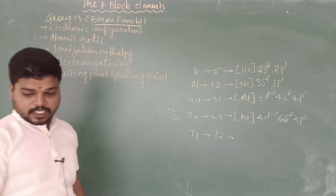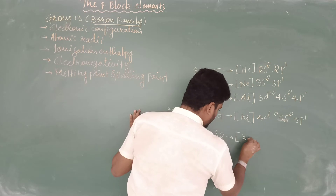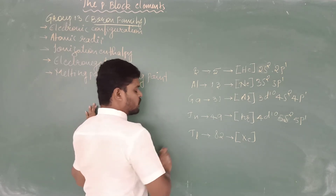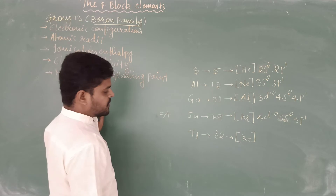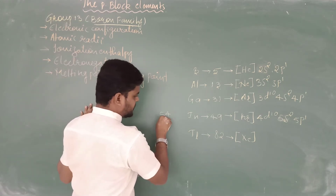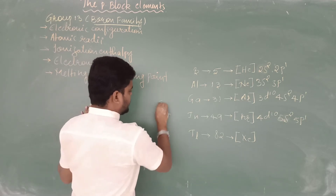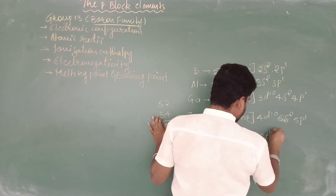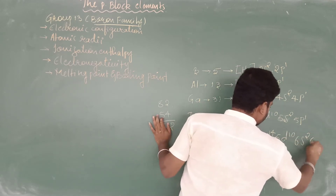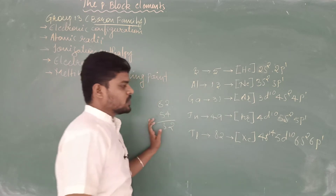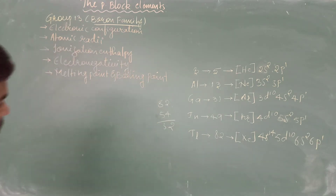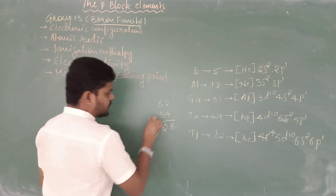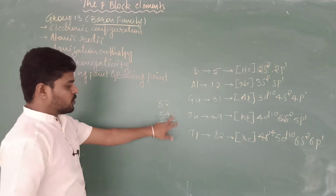For thallium, the preceding noble gas is xenon with atomic number 54. After xenon, we have the 4f and 5d electrons to account for, giving 32 additional electrons, and the remaining electrons fill as 4f¹⁴ 5d¹⁰ 6s² 6p¹.